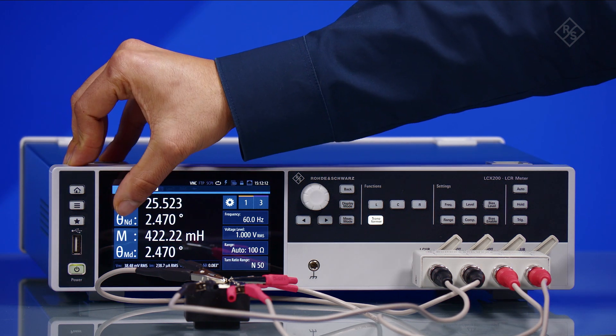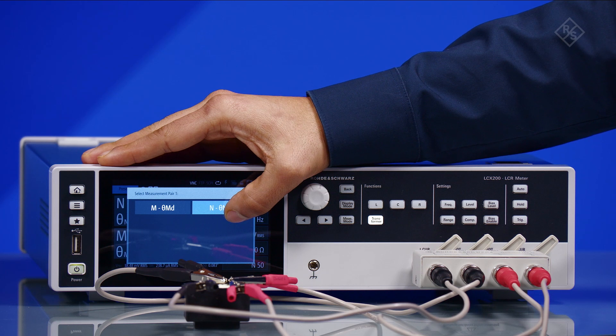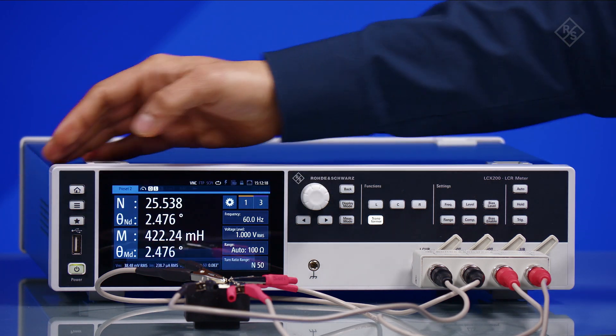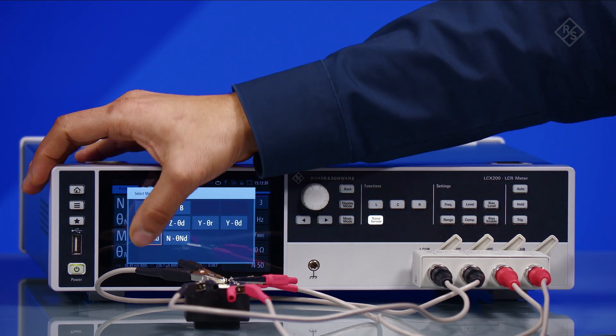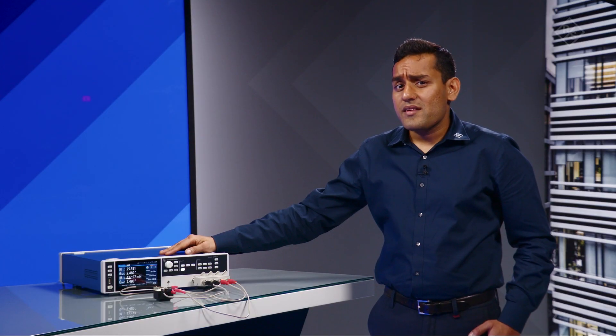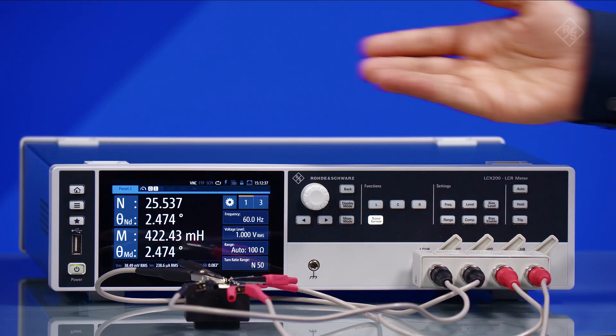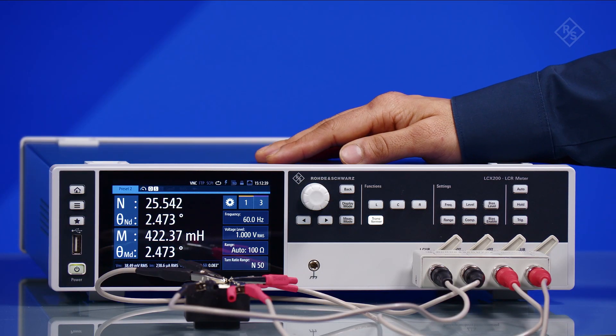The device measures the required primary and secondary parameters. And now this is really a very cool feature in our LCX 200. You need not do any calculations for mutual inductance and turns ratio. The values are displayed directly on the LCX screen.